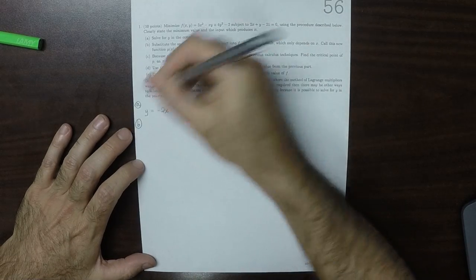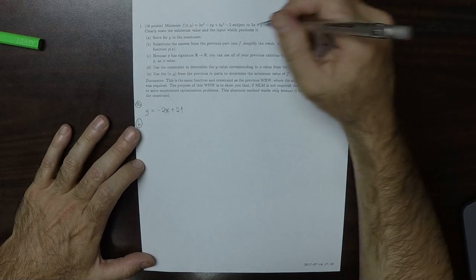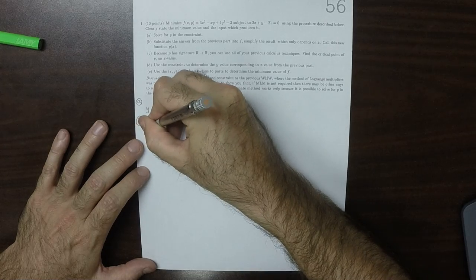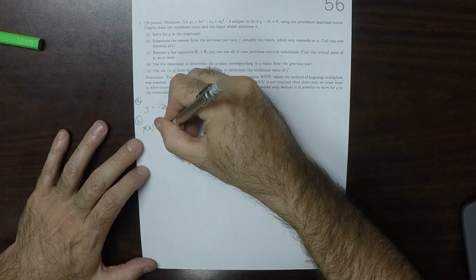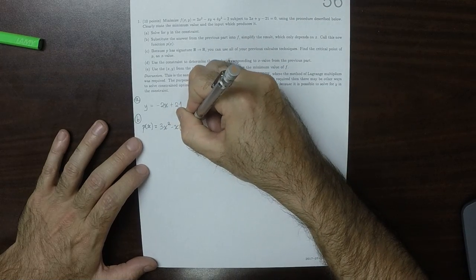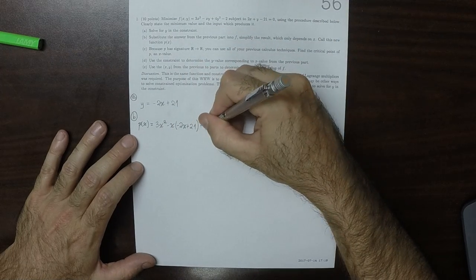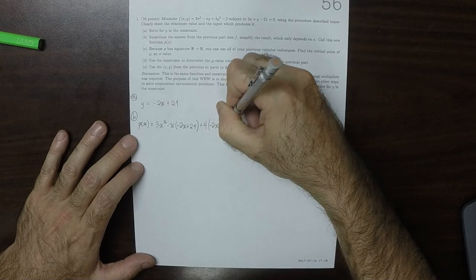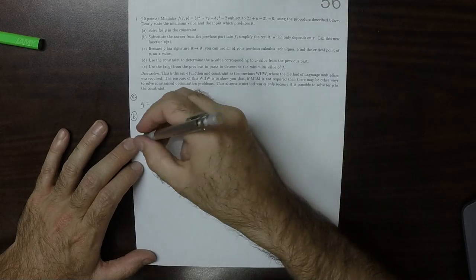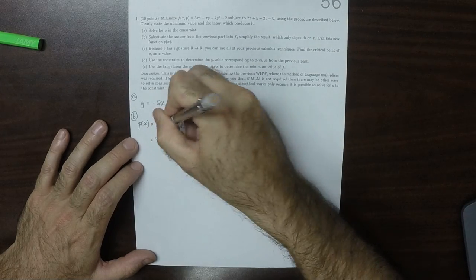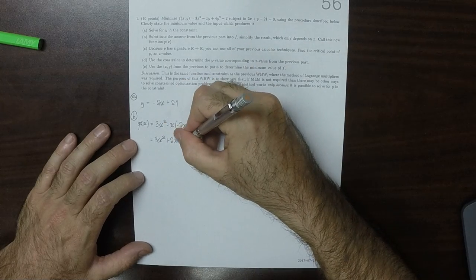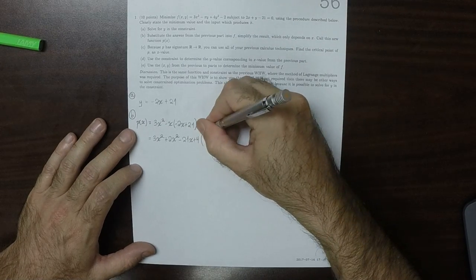Part B. We're supposed to plug this y value into f and call the result p of x. So p of x is going to be 3x squared minus x times y, but we're going to use negative 2x plus 21 plus 4y squared. And again, we're going to use negative 2x plus 21 minus 2. And we're supposed to simplify this result. Okay, well, that'll be 3x squared. And I'll distribute the negative x in.